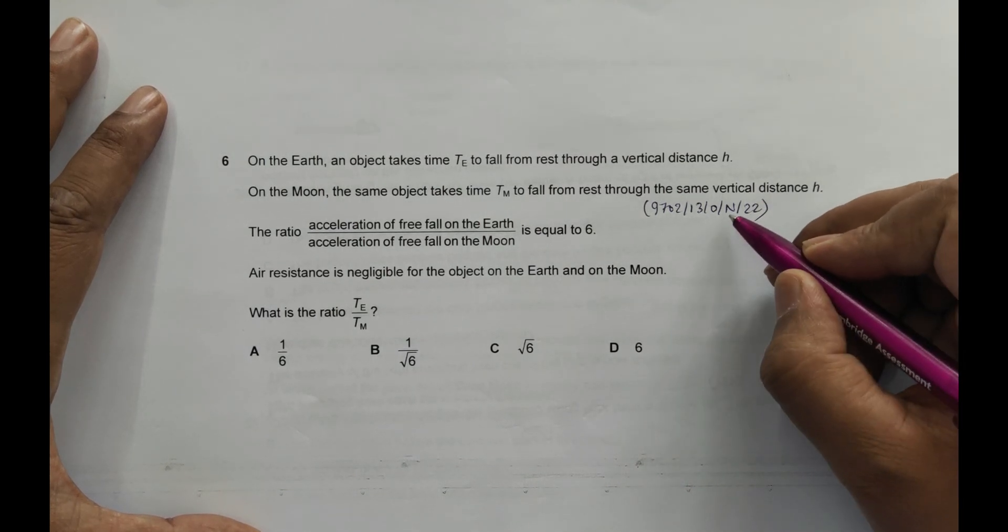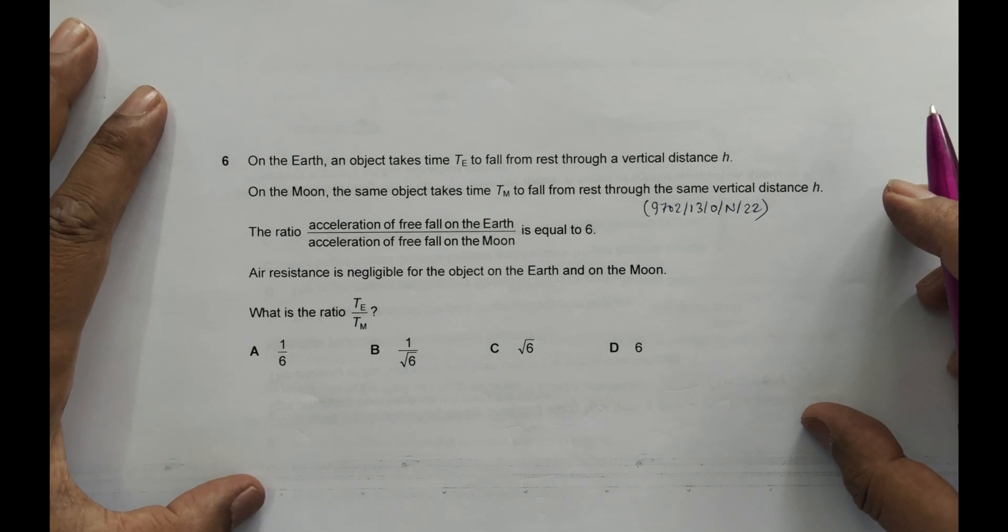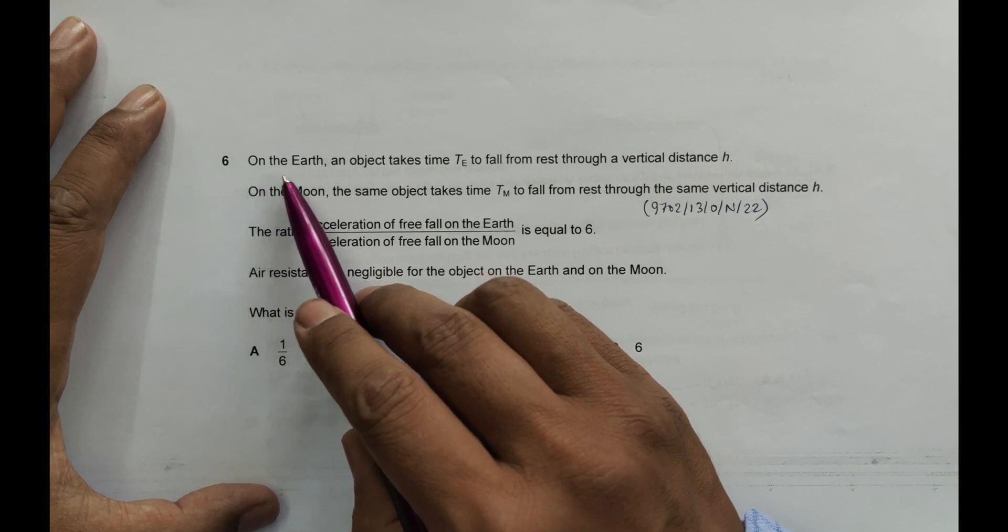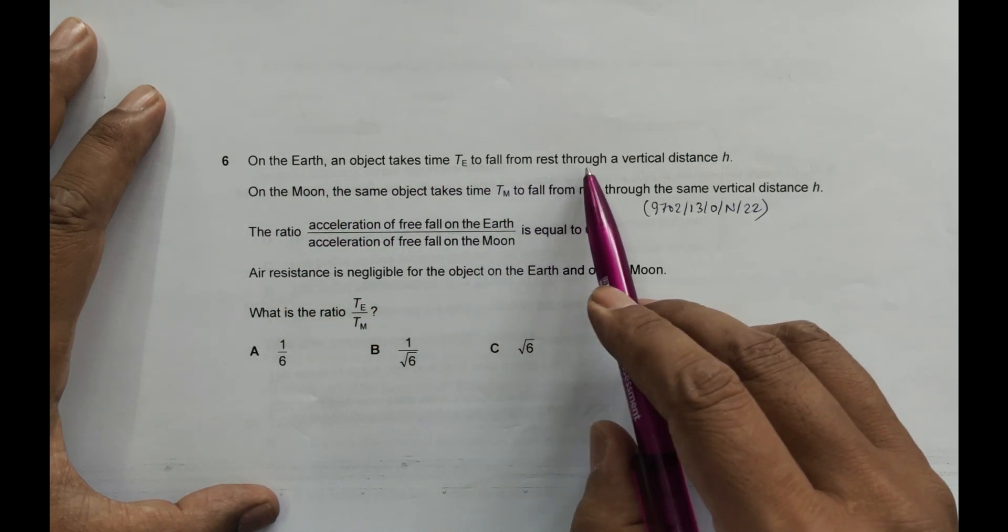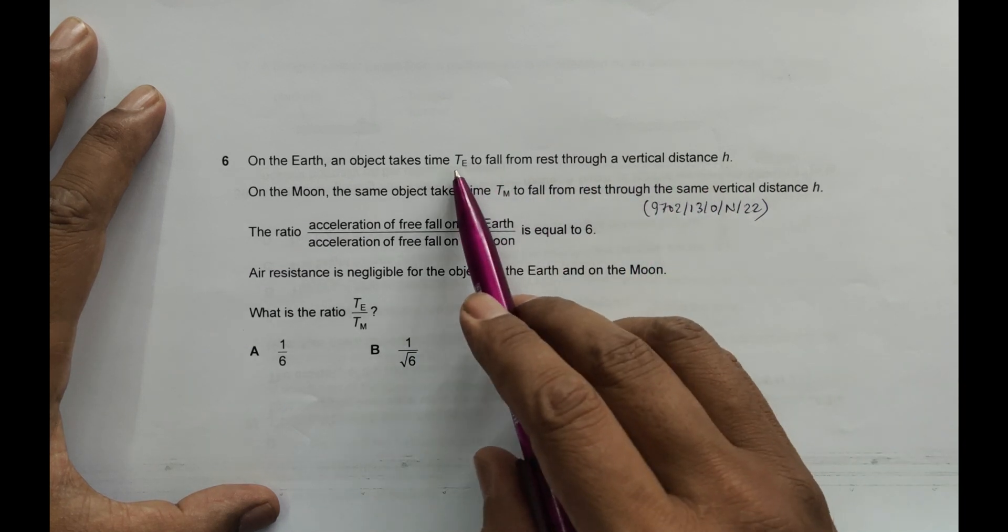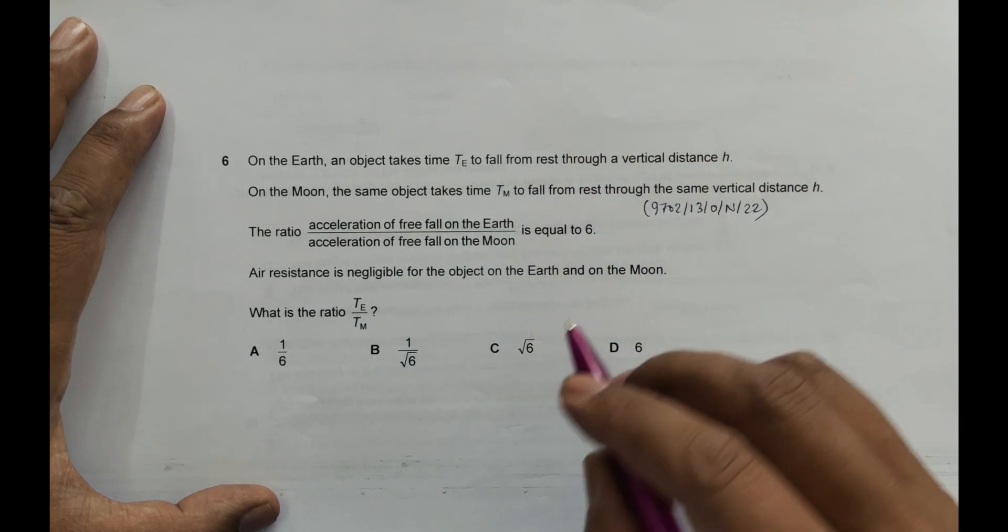Hello folks, this is 2022 October November paper 1 variant 3, question number 6. This question is concerned with the chapter of kinematics. It says on the Earth, an object takes time Te to fall from rest through a vertical distance h. So it takes time Te to fall from rest through a vertical distance h.